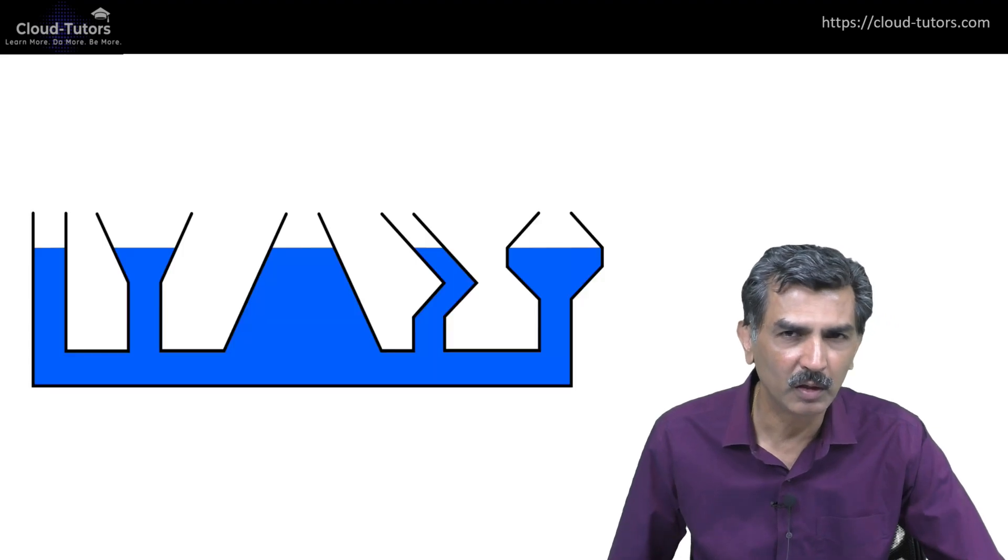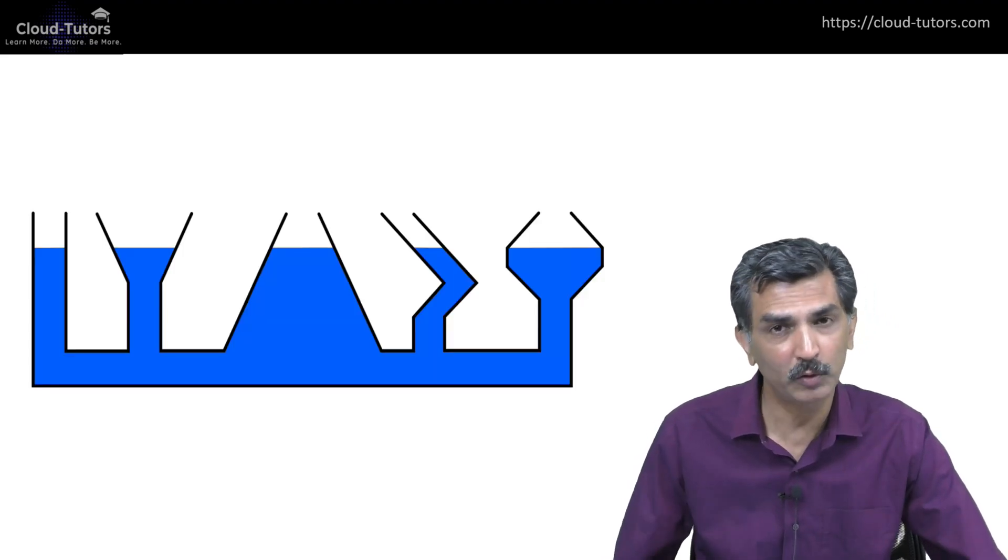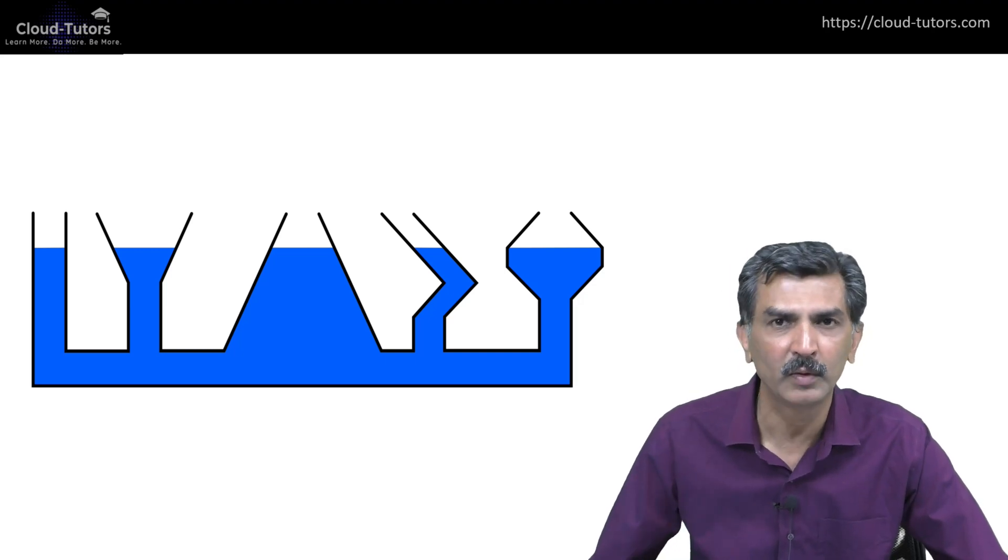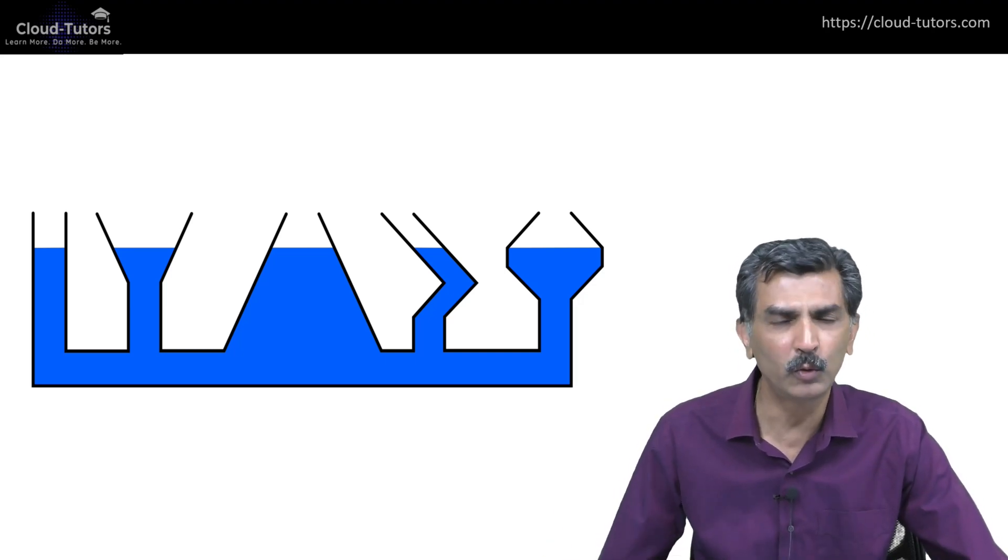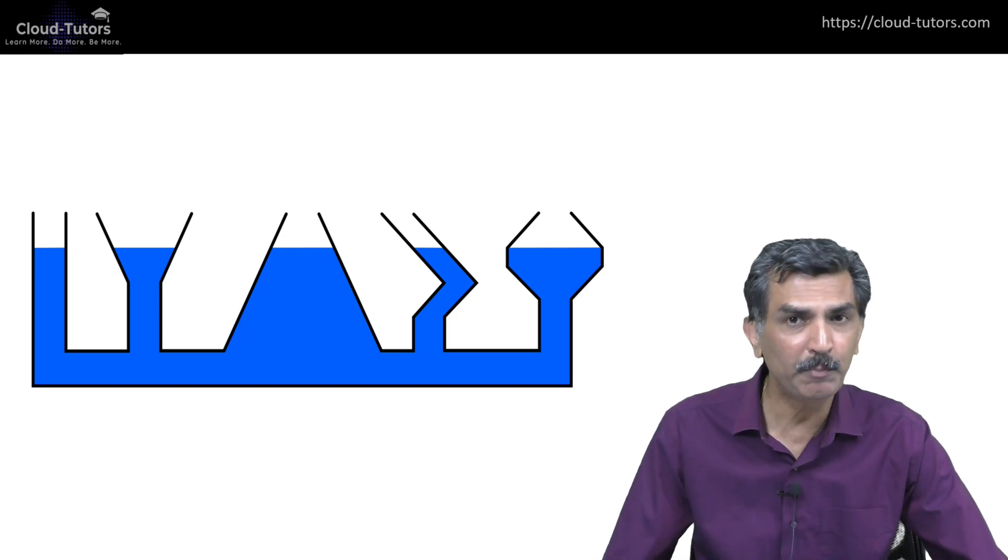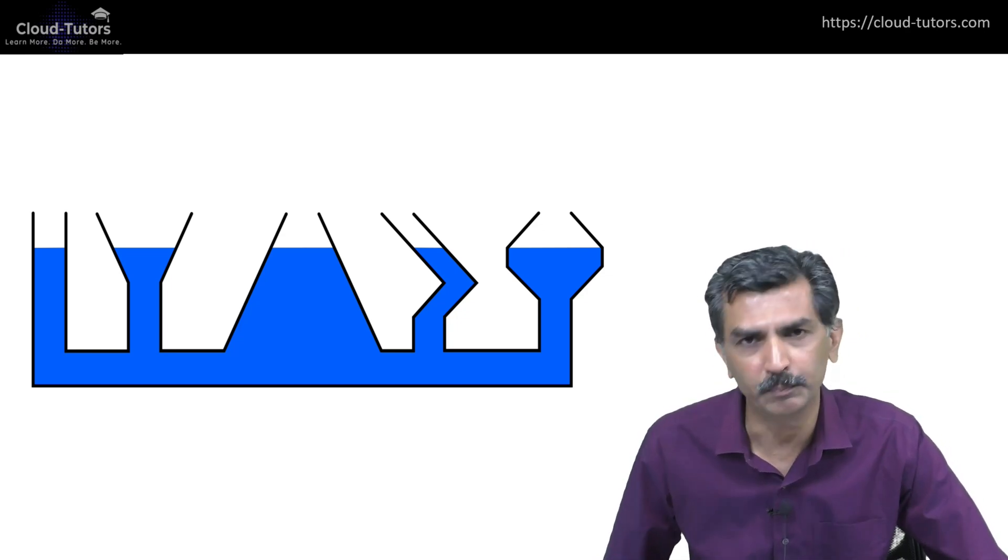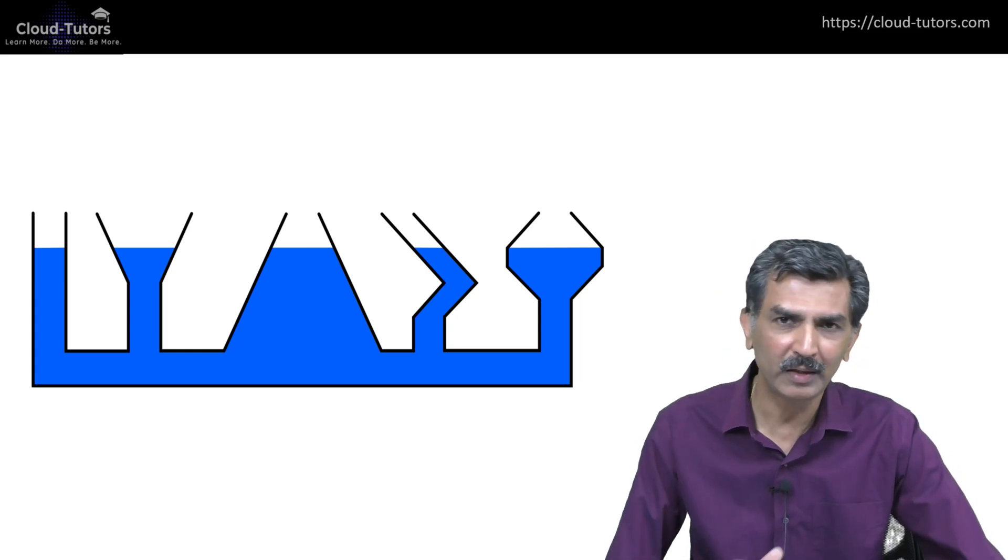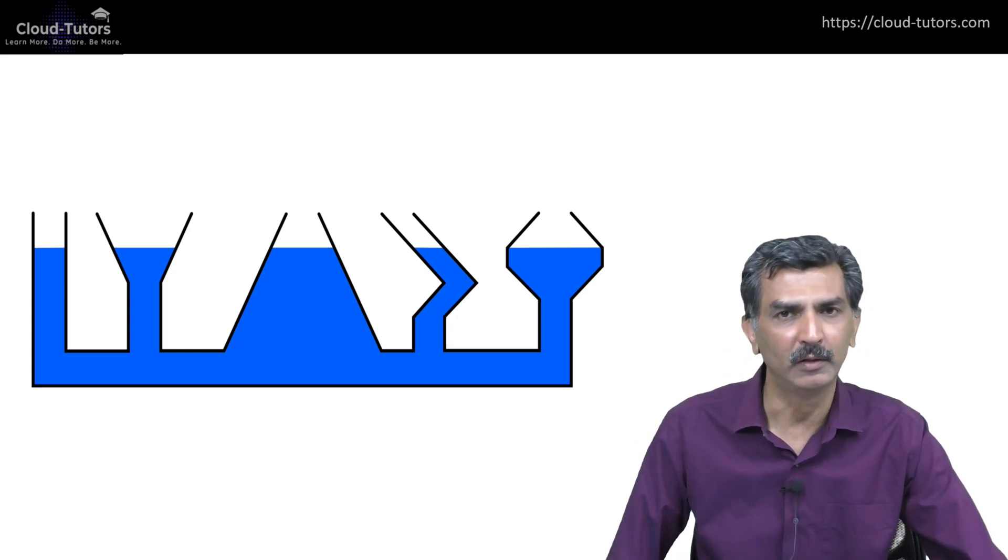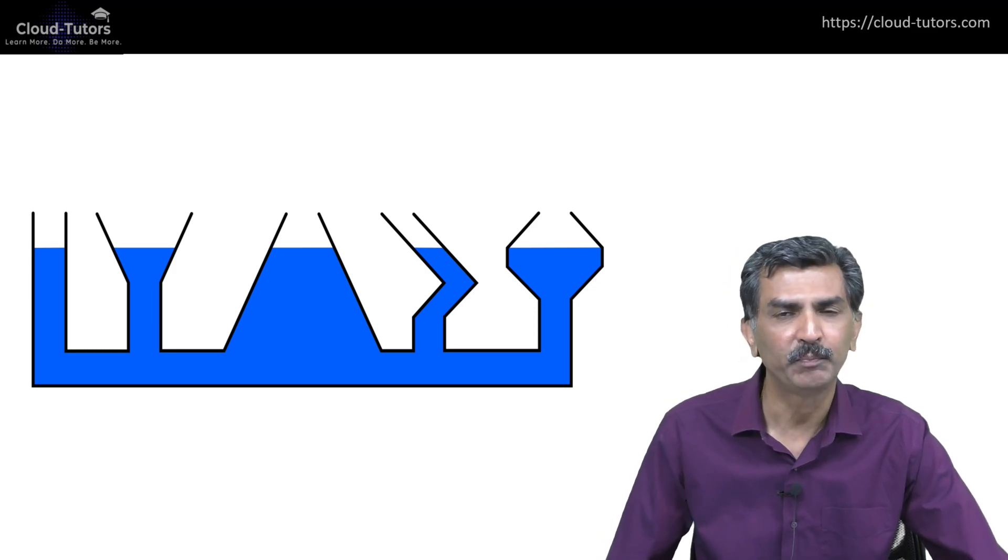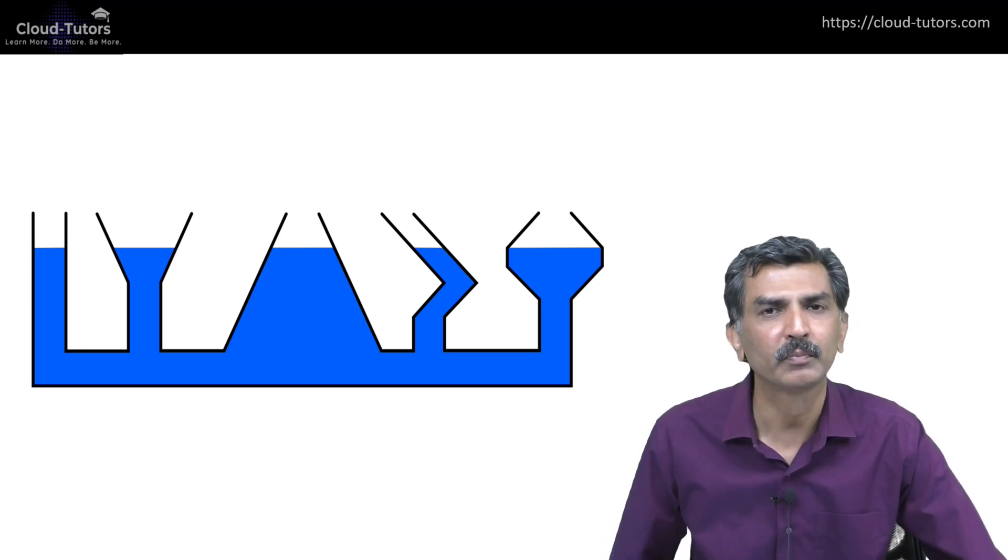Before we get to the explanation about the straw, consider this arrangement: it's a set of vessels containing a liquid, let's say water. Clearly the shapes of the vessels are different, but they are interconnected at the bottom, and you will notice that the horizontal level of the liquid in all these vessels is the same.